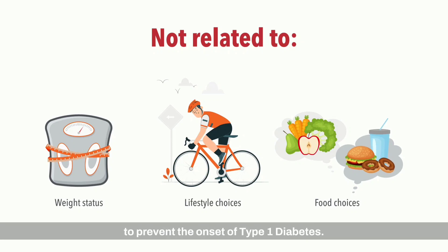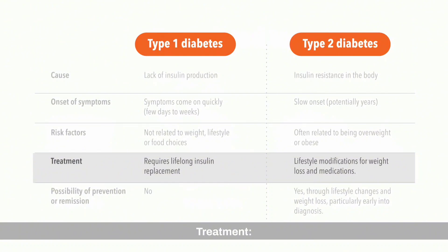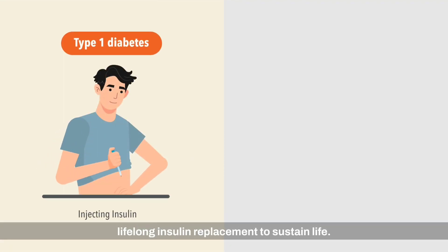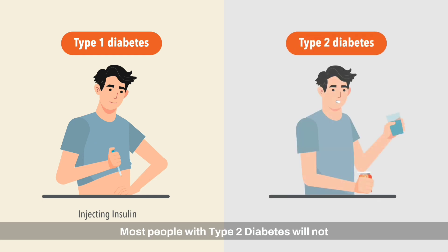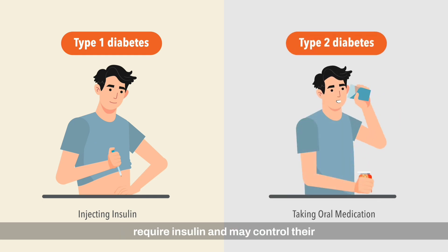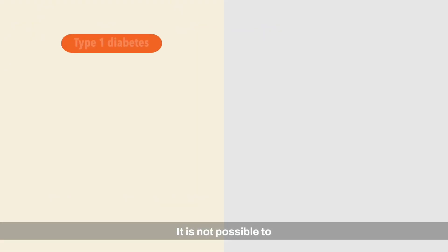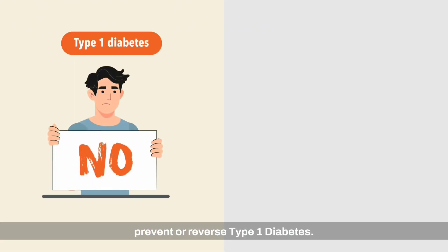Currently, there is no way to prevent the onset of type 1 diabetes. Regarding treatment, individuals with type 1 diabetes require lifelong insulin replacement to sustain life. Most people with type 2 diabetes will not require insulin and may control their glucose levels using oral medications.